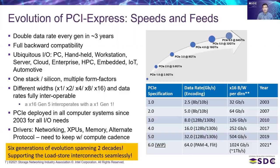PCI Express is used across PC, handheld, workstation, server, cloud, enterprise, HPC, embedded, IoT, and automotive. You have one stack, one silicon, capable of working seamlessly across multiple form factors across the entire compute continuum. We have different widths for different types of devices — x1 through x16. Full backward compatibility ensures that an x16 Gen 5 device will interoperate seamlessly with an x1 Gen 1 device. Multiple PCIe devices are leading the technology transition from generation to generation, including networking and XPUs.